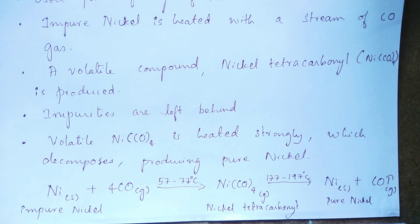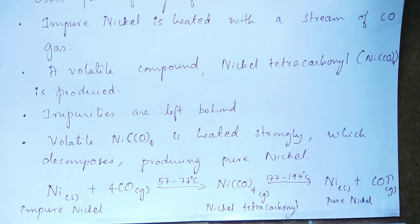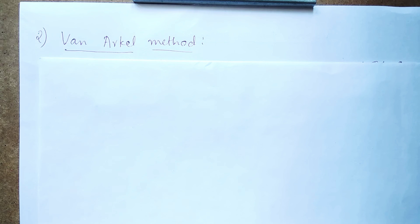Nickel tetracarbonyl heated at 177 to 197 degree Celsius produces pure solid nickel, while carbon monoxide gas escapes as the side product. This is how you can purify impure nickel using the Mond process, which is a vapor phase refining technique.